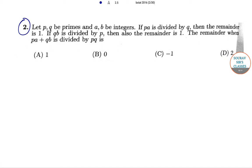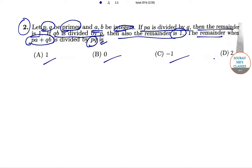In question number 2 it has been said that let P and Q be primes and A, B be integers. Now if PA is divided by Q then the remainder that we get is 1, and if QB is divided by P then the remainder is also 1. Now we need to find out the remainder when PA plus QB is divided by PQ. The options are 1, 0, minus 1, and 2.